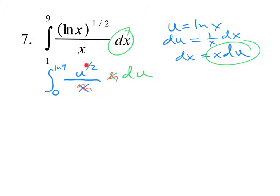Add 1 to the exponent. That becomes u to the 3/2. Divide by the new exponent, which is the same thing as multiplying by 2/3.